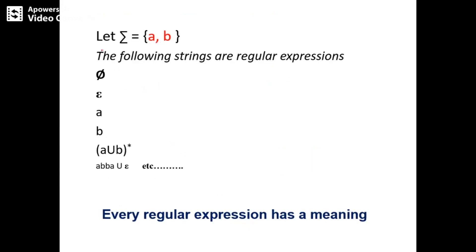Consider some examples of regular expressions when the alphabet is {a, b}. Null can be a regular expression. Empty, just a single character a or b, a-union-b-star — which generates strings of the form epsilon or any combinations of a and b — and a·b·b·a union epsilon are all regular expressions. Every regular expression has its own meaning.